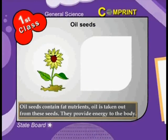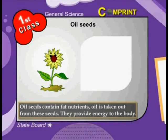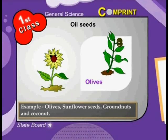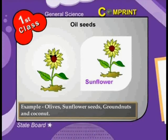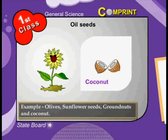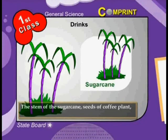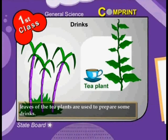Oil seeds: oil seeds contain fat and nutrients. Oil is taken out from these seeds and they provide energy to the body. For example, olives, sunflower seeds, groundnuts, and coconut. Juices and drinks: the stem of sugarcane, seeds of the coffee plant, and leaves of the tea plant are used to prepare some drinks.